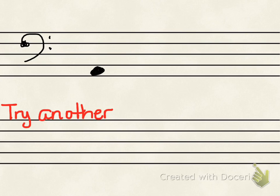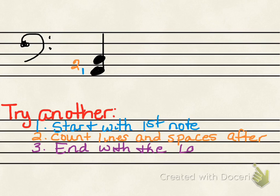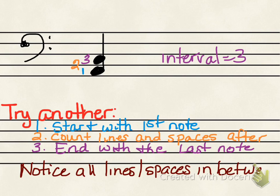Let's try another. Start with the first note and label that one. Then count all the lines and spaces in between. In this case, we only have one line and no spaces. Then we end with the last note, so we have an interval of three. Notice all the lines and spaces in between the notes are counted — you don't skip any.